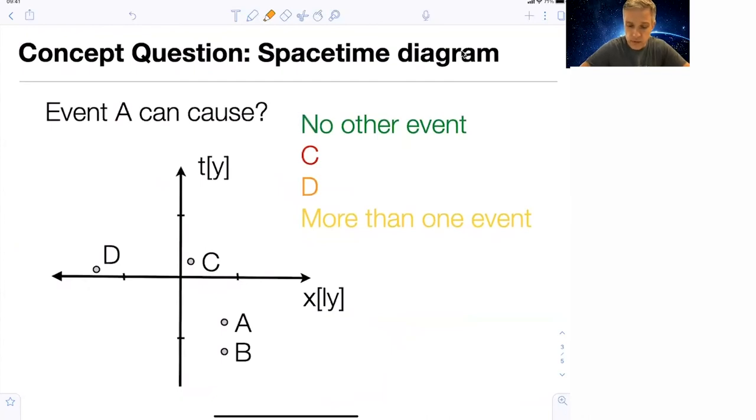Let me conclude with a concept question. We have event A and ask: can event A cause other events? Event A might be the invention of a spacecraft. Can event A cause event C, event D, or more than one event like B and C or B and D?